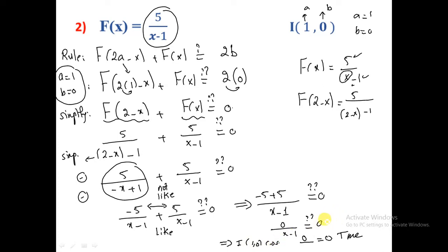I want to mention a condition — though it's not required to write it — that x-1 must not equal 0, meaning x cannot equal 1, since the denominator cannot be zero. Note that 0 divided by any number is 0, but if x = 1, we'd have 0/0, which is indeterminate. Just a small remark.